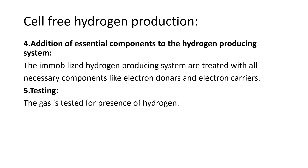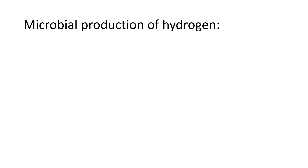The hydrogen producing system is allowed to produce hydrogen and the gas is tested for the presence of hydrogen. When results are positive, the gas is selected for use. This is the basic procedure for the production of hydrogen gas.